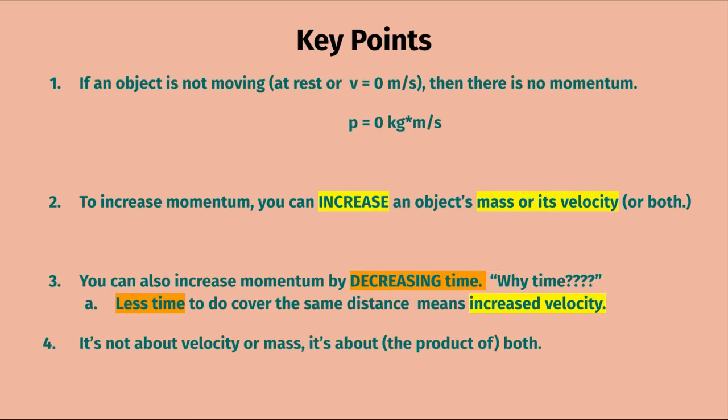Some key points about momentum: if an object is not moving — meaning it's at rest, or velocity equals zero meters per second — then there is no momentum at that point; p equals zero kg·m/s. In order to increase momentum, you can increase an object's mass, its velocity, or both.